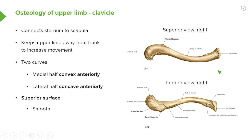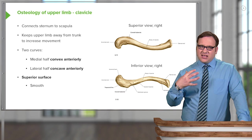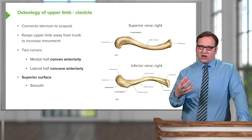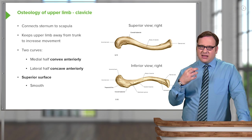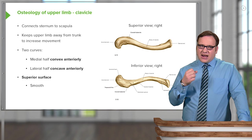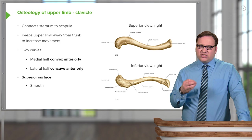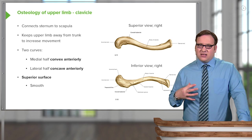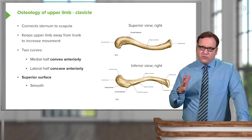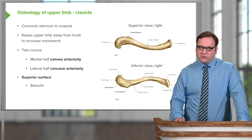The clavicle connects the sternum to the scapula. It's important as it keeps the upper limb away from the trunk, allowing increased movement — there's less chance for the upper limb to hit the chest wall, as it's been moved away from the trunk.